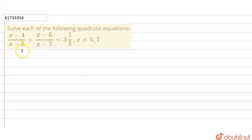Hello everyone. The question is: solve each of the following quadratic equations. We have to solve the equation where x is not equal to 5 and 7.